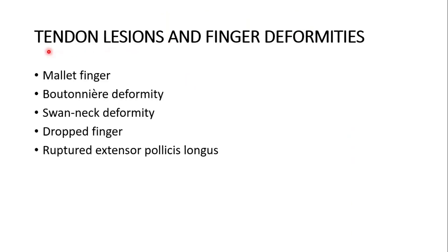This is one of the tendon lesions and finger deformities. The list includes mallet finger, boutonniere deformity, swan neck deformity, dropped finger, and ruptured extensor pollicis longus.